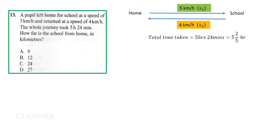The total time taken going from home to school and back was five hours and 24 minutes, which is equivalent to five and two-fifths of an hour. We get two-fifths by finding the fraction of 24 minutes in an hour — you take 24, divide by 60, and simplify.